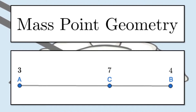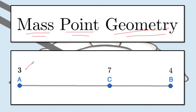So without further ado, let us dive into today's topic. The concept of mass point geometry is very simple. You have masses on a point on a geometric figure. We have segment AB with point C on segment AB. The 3, the 7, and the 4 here are called weights. So 3 is the weight assigned to point A, 7 is the weight assigned to point C, and 4 is the weight assigned to point B. This is an example of a balanced figure — the distribution that keeps segment AB balanced on point C.